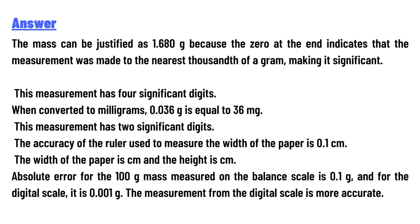When converted to milligrams, 0.036 g equals 36 mg. This measurement has two significant digits. The accuracy of a ruler used to measure the width of paper is 0.1 centimeters.